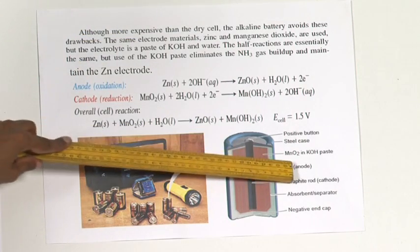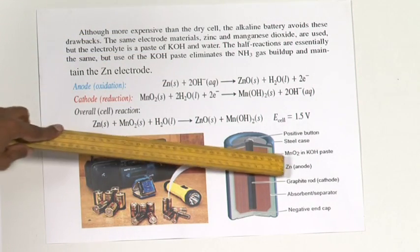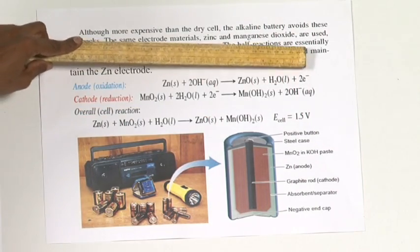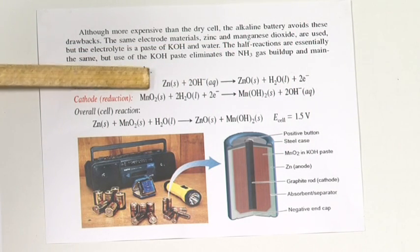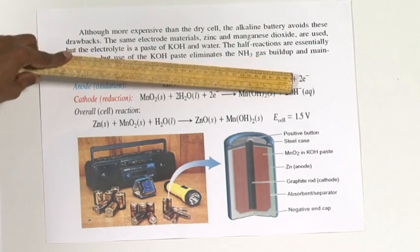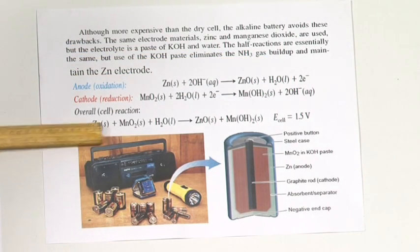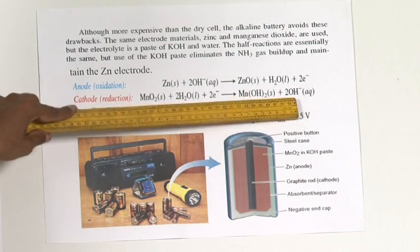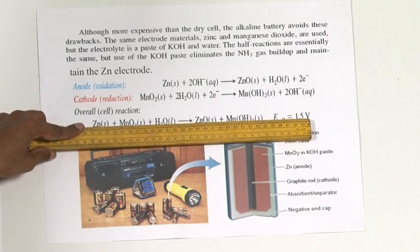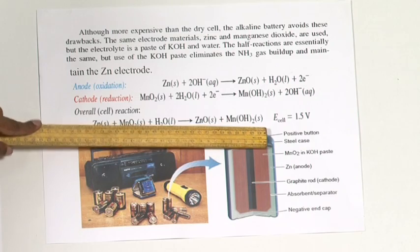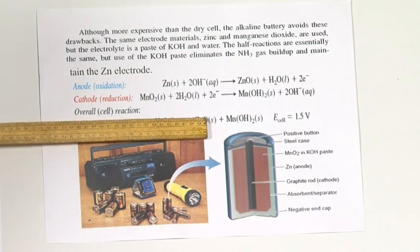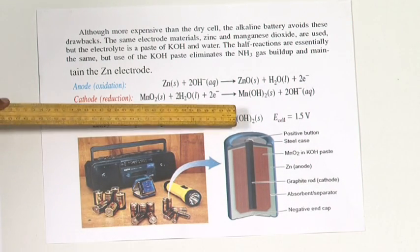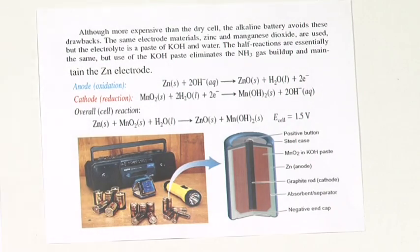The reaction in the alkaline cell: zinc (anode) in the presence of potassium hydroxide is converted to zinc oxide with removal of electrons. Those electrons are accepted by MnO2, converting it to Mn(OH)2. The overall reaction is: Zn + MnO2 + H2O → ZnO + Mn(OH)2. The total voltage is 1.5 V. This is a primary cell because it cannot be recharged; secondary cells are those that can be recharged.